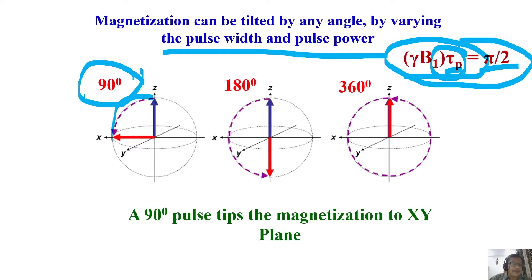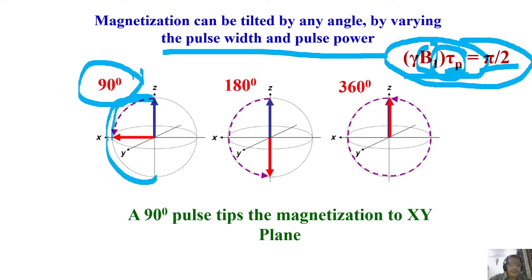If you double the pulse width while keeping all other things constant — keeping the power constant — what happens? The magnetization goes further. It comes to the minus Z axis. By increasing the pulse width, you take the magnetization from Z to X, then X to minus Z.